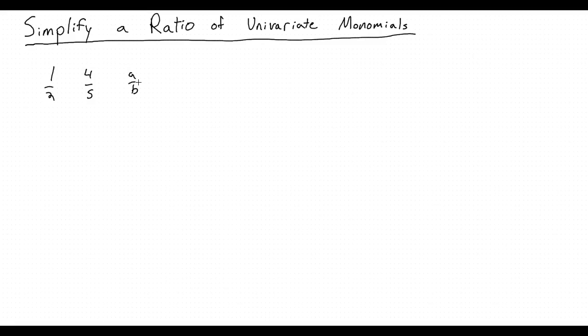And we know that a monomial is a single term, so something like 5a, 6b, or 7ab. Combining these two, we can see a ratio of monomials looks something like this.